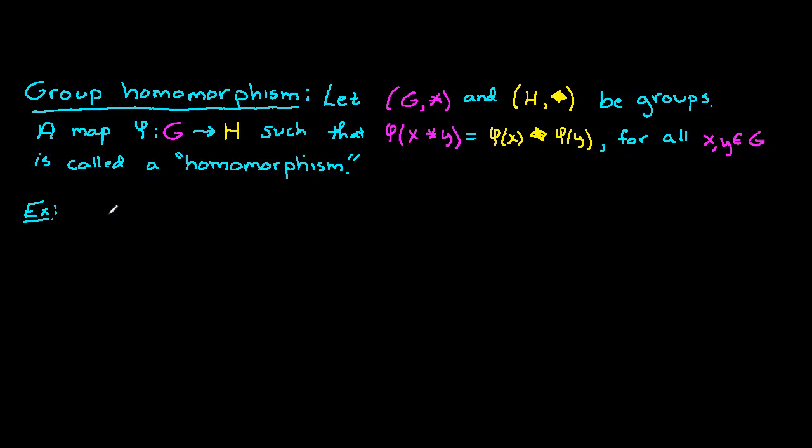In this video we will talk about group homomorphisms. A group homomorphism is defined as follows. Let (G,*) be a group, where G is a set and * is its binary operation, and they go together to make a group. Let's consider another group (H,◇), where H is another set and ◇ is another binary operation, and they go together to make a group.